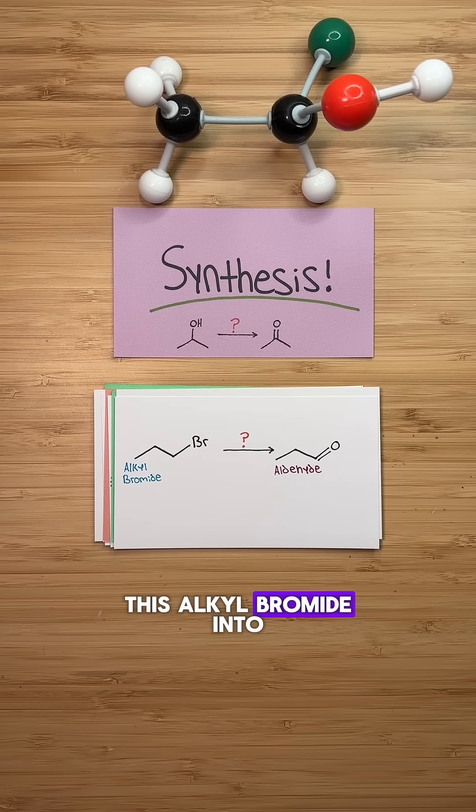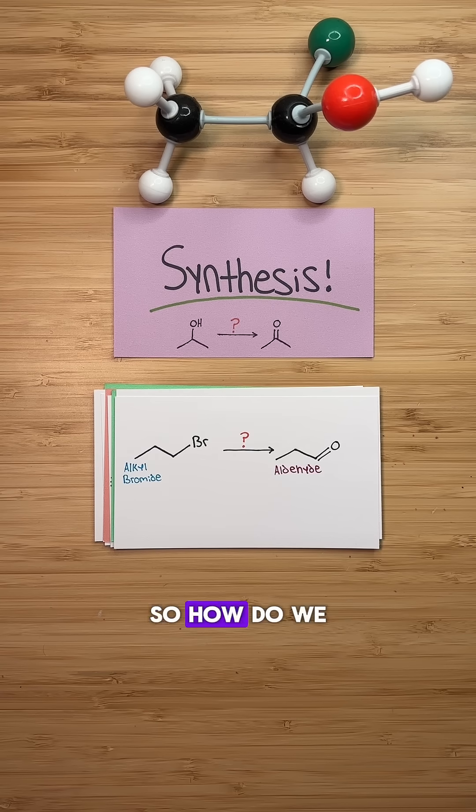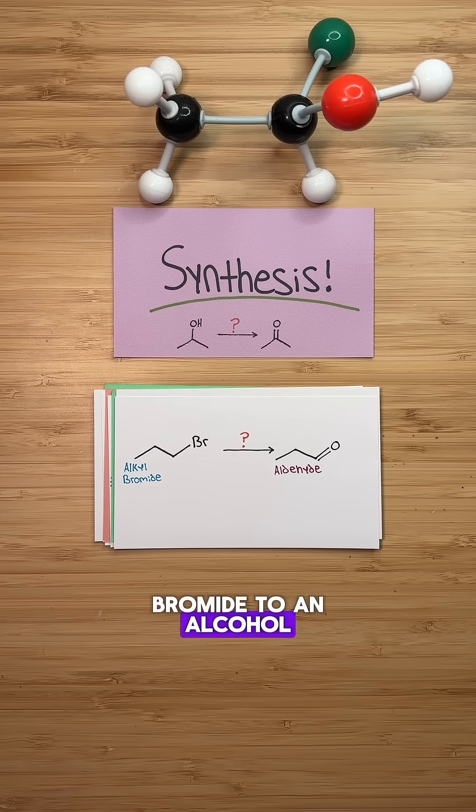We can't directly turn this alkyl bromide into an aldehyde, but we can turn an alcohol into an aldehyde. So how do we get from an alkyl bromide to an alcohol?